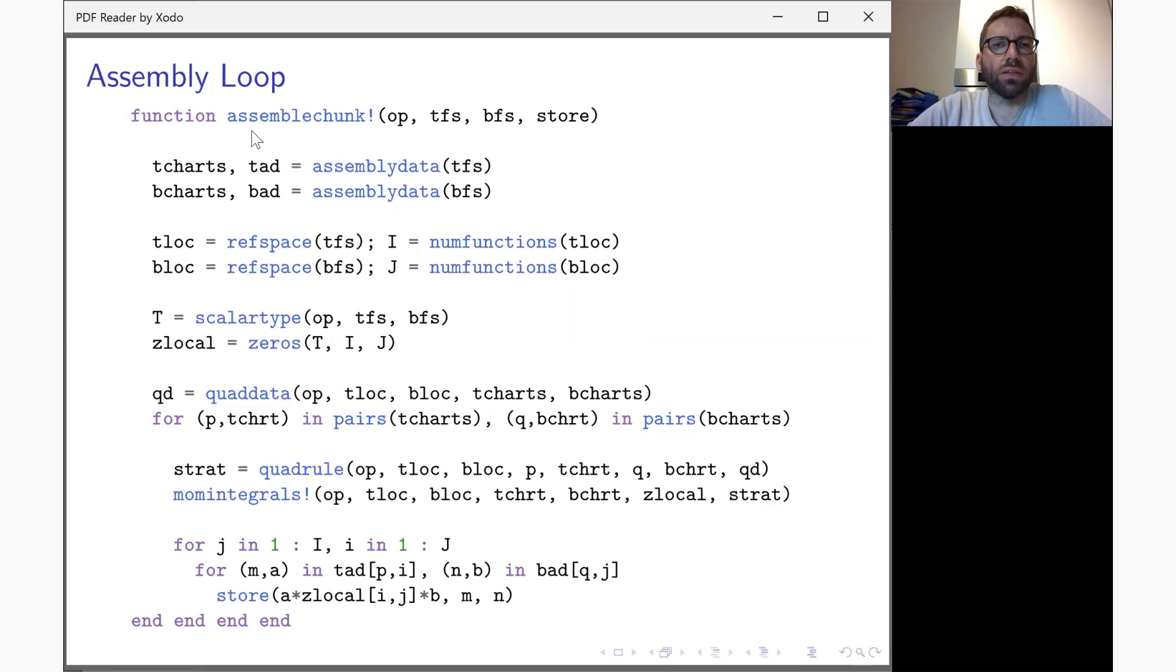Boundary element operators are integral operators, not differential operators. Integral operators are based on the Green's function and have any two points in space communicate. The consequence for assembly of this is that the matrix that will be assembled is a dense matrix, and the number of for loops in the assembly routine essentially doubles. We're not having a single geometric loop but a double geometric loop. The role of assembly data is similar as in finite elements.